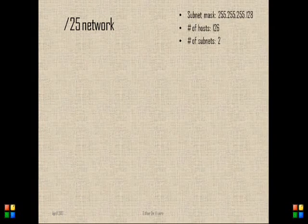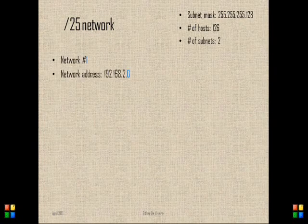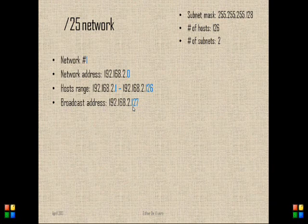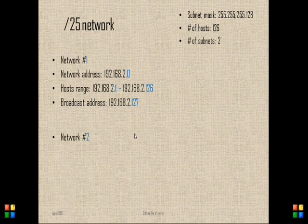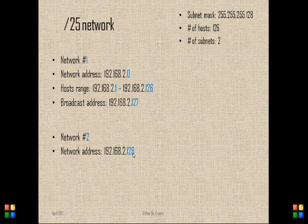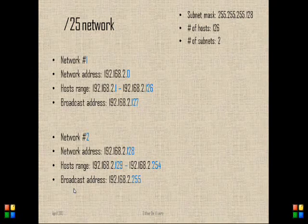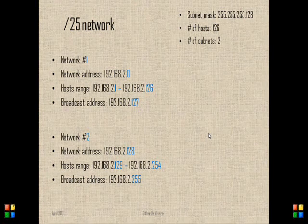Network number one is going to have the network address at dot zero, the host range from .1 to .126, and the broadcast address at .127. After the end of network number one, we start network number two. The network address for network number two is dot 128, the host range is .129 to .254, and the broadcast address is dot 255. And this is our complete slash 25 subnet network.